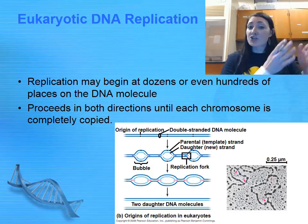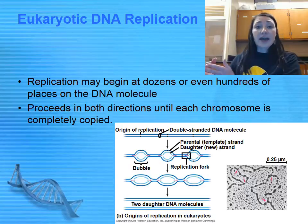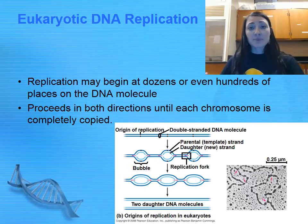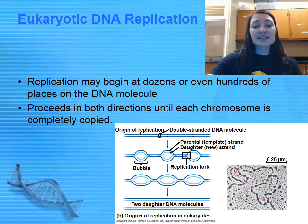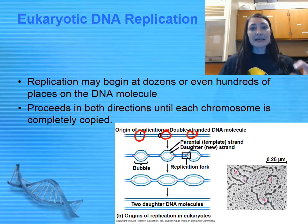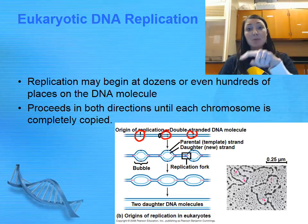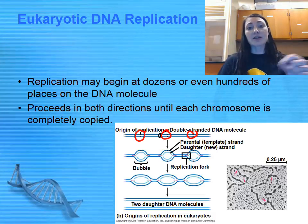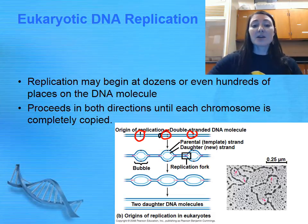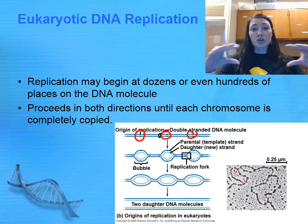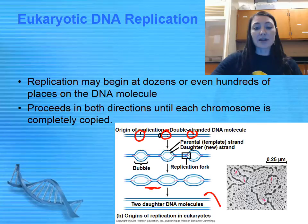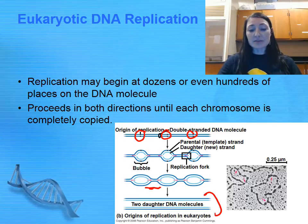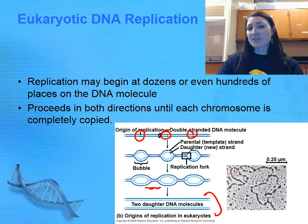If we were to start replication at one end and work to the very other end, it would take far too long to be useful in our body. So instead, we have a bunch of sites in the center of DNA called origins of replication where DNA starts replicating. The replication bubbles open up, enzymes come in, add nucleotides, and make a daughter strand. The bubbles get larger and larger until they grow into each other, and you wind up with two daughter DNA molecules — a much faster way to copy than going from one end to the other.